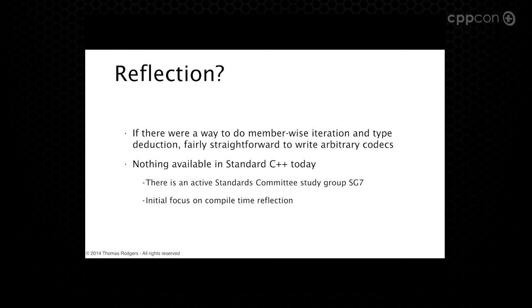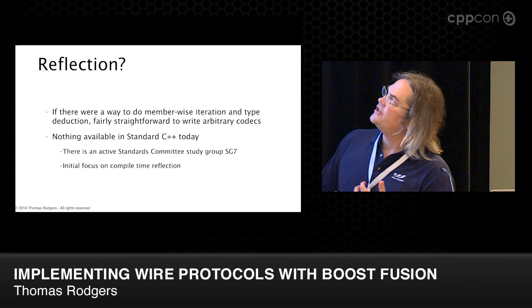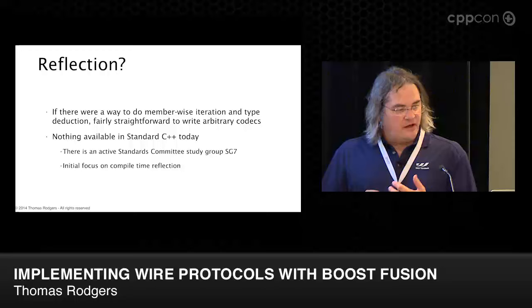If there was a way to do member-wise iteration and dispatch on types in C++, this would solve the problem. But there's nothing available in the standard today. There is an active study group looking at this — SG7, chaired by Chandler Carruth. If you want reflection in C++, you should go hassle him about that. Their initial focus is on compile-time reflection, so you can ask information about types at compile time, which is very similar to what we're going to be doing here.